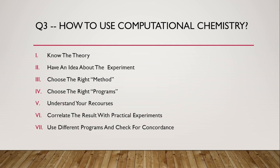Use different programs and check for concordance. In previous days, only one program was used and the result was published. In the current scenario, more than one program is used for the same molecule and system to get concordant results. Results from various programs are tabulated to increase accuracy. For example, if you are considering an atom like selenium, one program may have preset parameters for it, but another program may have more accurate parameters — so checking with different programs improves accuracy.